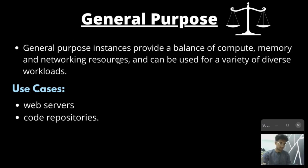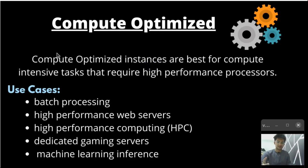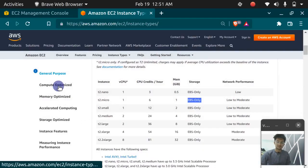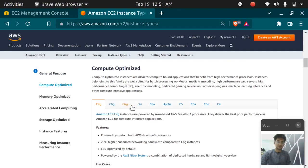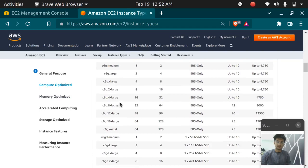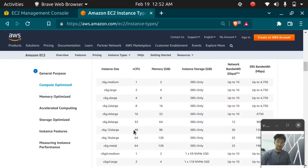The next type is compute optimized. Compute optimized instances are best for compute-intensive tasks that require a high-performance processor. Whenever you have a workload that requires more compute power, you can use compute optimized. The use cases are batch processing, high-performance web servers, high-performance computing or HPC, dedicated gaming servers, or machine learning inference. The different types of compute optimized instances are the C family — C7G, C6G, and others. For example, C6G has core counts of around 32, 48, and 64, making it suitable for compute-intensive workloads.